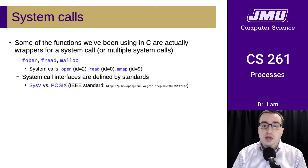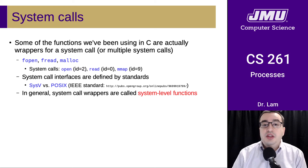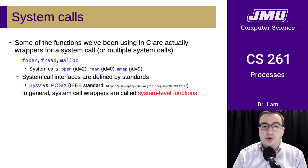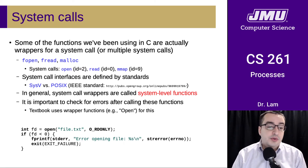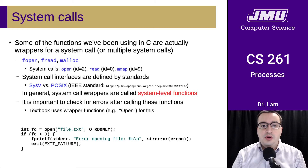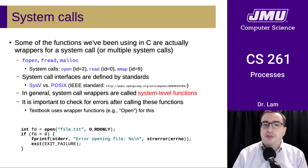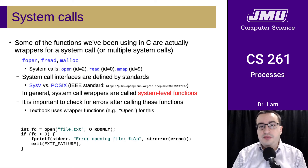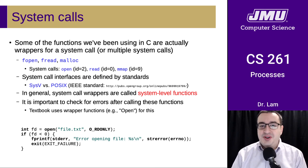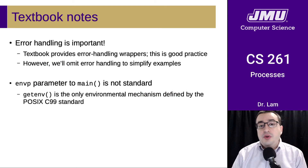These system call interfaces are defined by standards — the two big ones are System 5 and POSIX, and we're using the POSIX ones this semester. In general, these system call wrappers are called system-level functions — they're functions that wrap kernel code. It's important to check for errors after calling these functions, and we've done this to a certain extent in the projects in this course. The textbook uses wrapper functions for these.